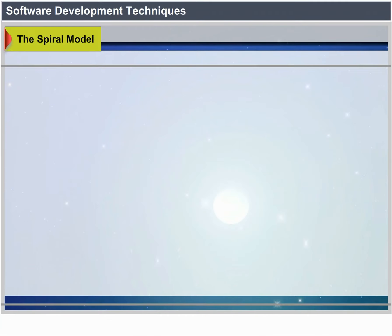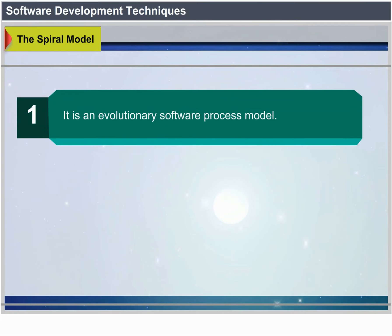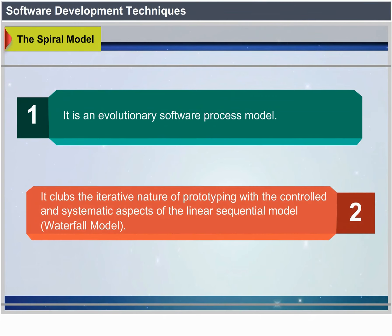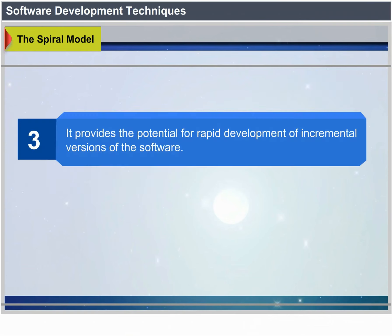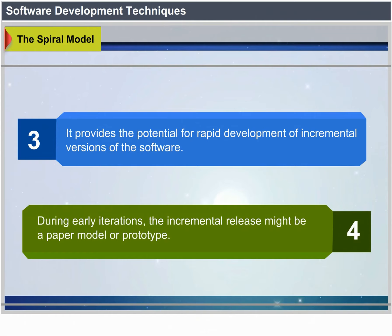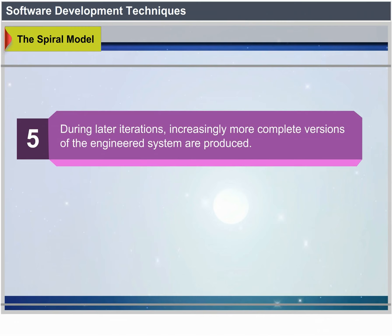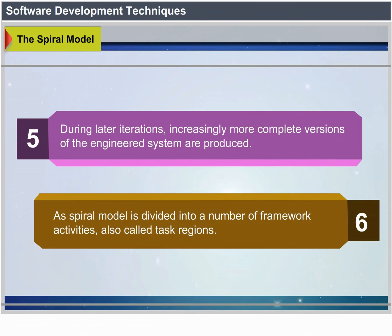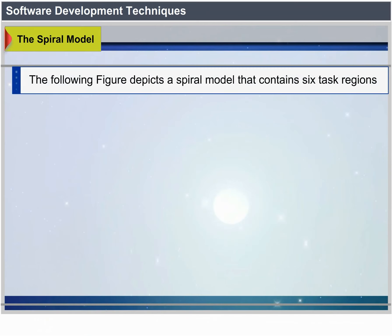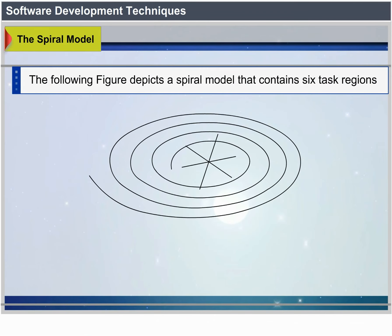The Spiral Model is an evolutionary software process model that couples the iterative nature of prototyping with the controlled and systematic aspects of the linear sequential model. It provides the potential for rapid development of incremental versions of the software. During early iterations the incremental release might be a paper model or prototype; during later iterations, increasingly more complete versions are produced. The Spiral Model is divided into a number of framework activities, also called task regions.